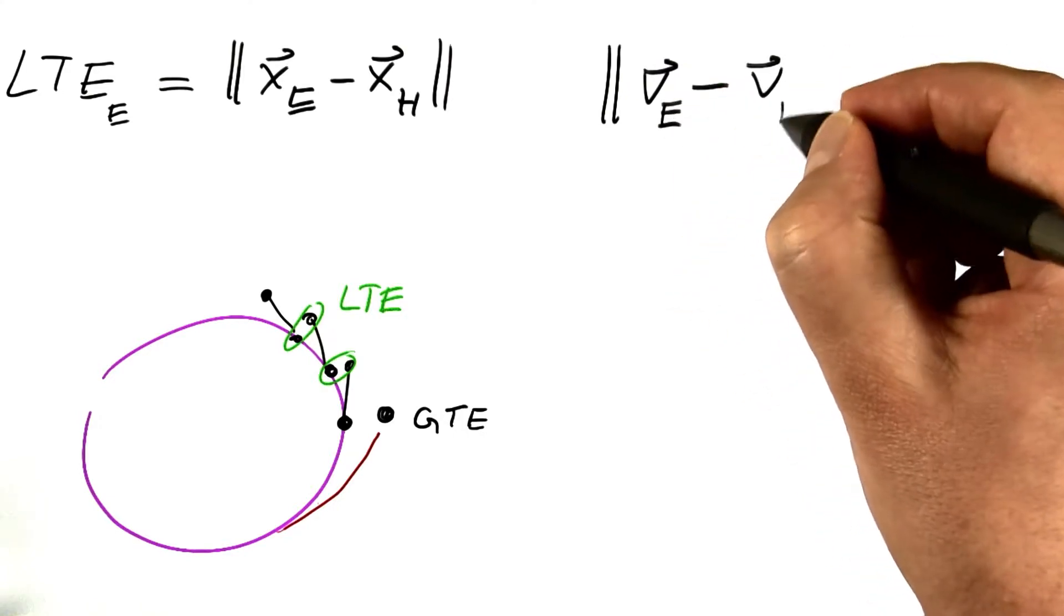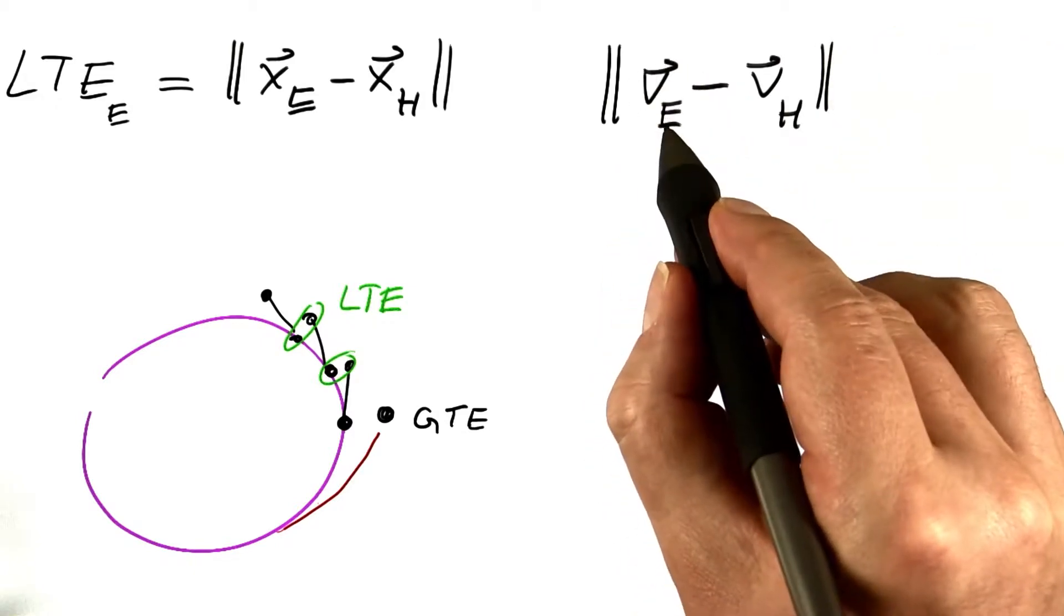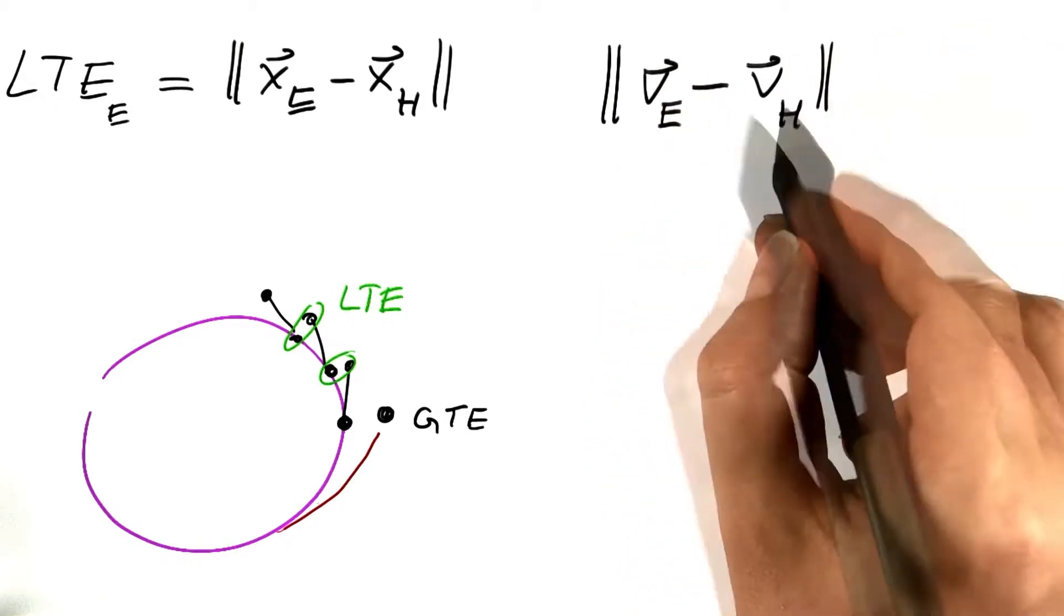So we need this term as well. By how far is the Euler estimate for the velocity off from Heun's estimate.